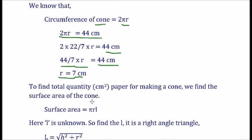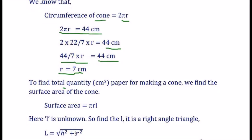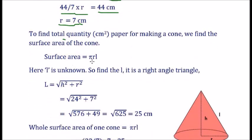To find the quantity of cm square paper for making a cone, we find the whole surface area of the cone. Whole surface area we need to find using the formula πrl. Here, l is also unknown. So, we have to find the value of l.